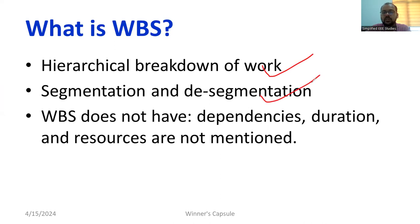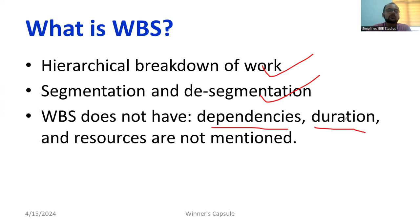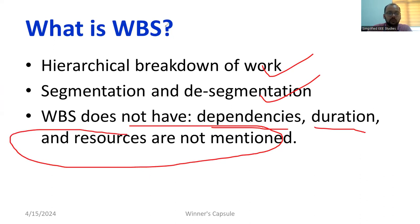Segmentation and desegmentation is the major key tool of WBS. Unfortunately, dependencies are not considered — all tasks are treated as independent work with no correlation. If one segment is missing, the entire project will not be completed — that is a problem of WBS. Duration is also a challenge because we do not know when teams will complete the work. Additionally, resources are not mentioned in WBS. These are the major drawbacks of WBS.